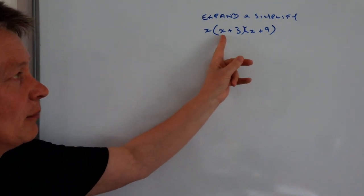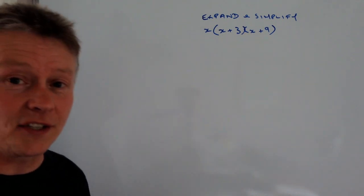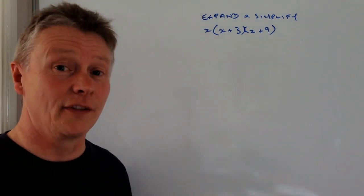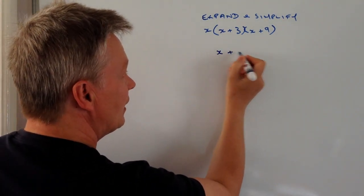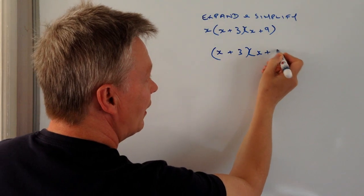The first thing is we're going to multiply these two brackets together and we're going to leave the x bit of it until the very end. So what I've got is x plus 3 times x plus 9.